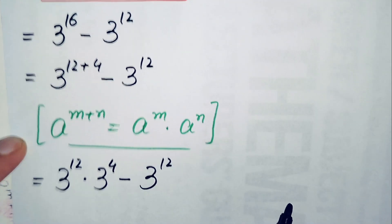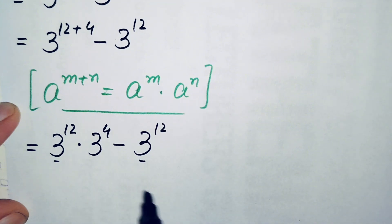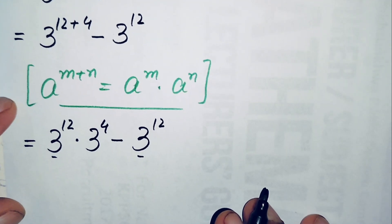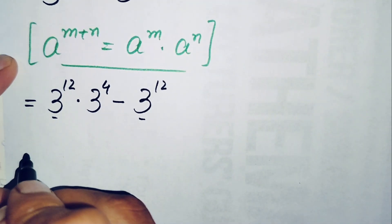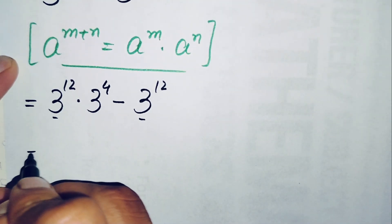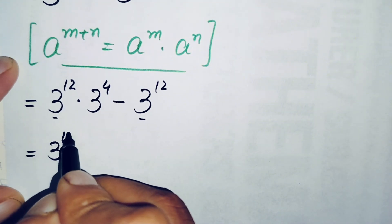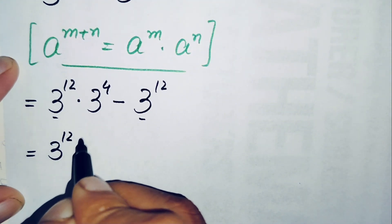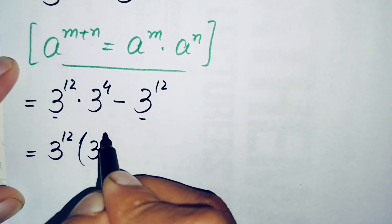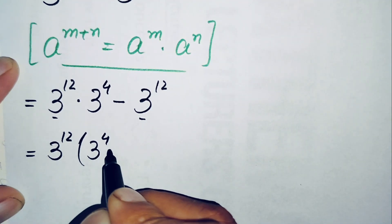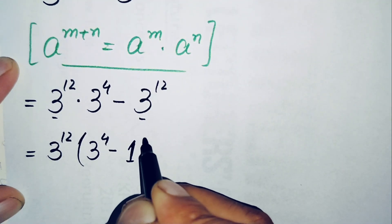Now 3 raised to power 12 is common in both terms, so we factor it out. The equation becomes 3 raised to power 12 times (3 raised to power 4 minus 1).